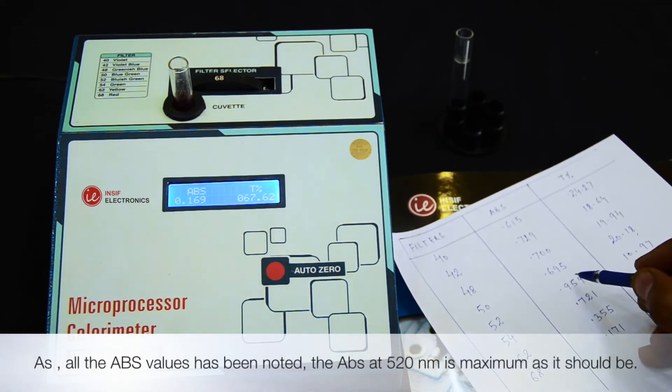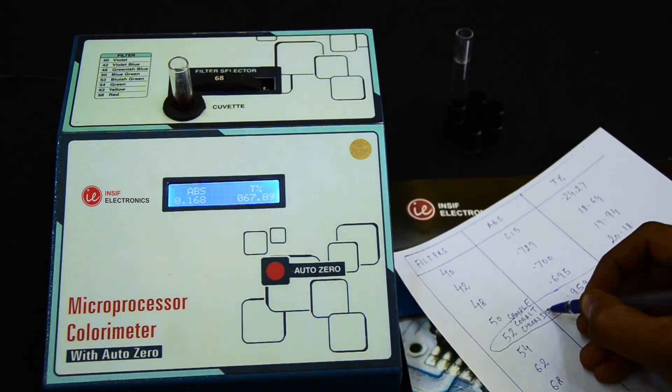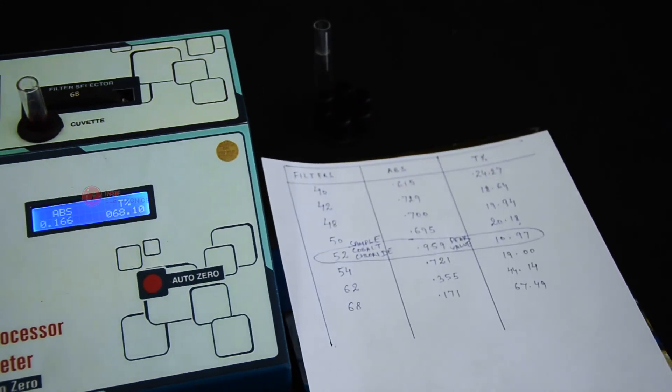As we have taken absorbance readings for all the filters, you will see the maximum absorbance is at 520 nanometers for cobalt chloride. Thank you for watching.